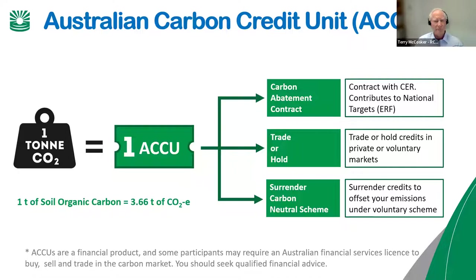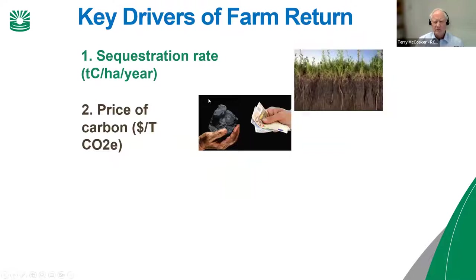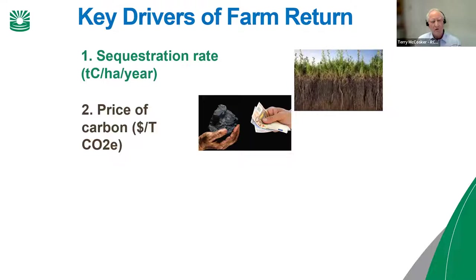In terms of returns from a soil carbon project, there are a number of drivers. The first and biggest is the sequestration rate — the rate in tons of carbon per hectare per annum that you can add to your soil. The price of carbon is also a driver. Over the next few months we have over 400,000 tons of soil carbon credits going to the market, and I was told the price is likely to be somewhere between $60 and $150 a tonne.